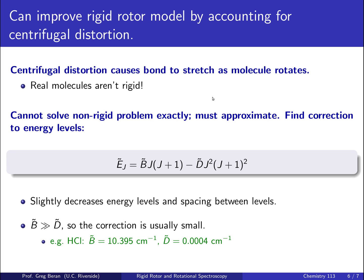Now, the rigid rotor model isn't perfect. Its molecules are not perfectly rigid, so you can improve the rigid rotor model by accounting for centrifugal distortion, that is, how the bond stretches as the molecule rotates. Now, that's a problem you can't solve exactly, so you have to use approximate techniques.